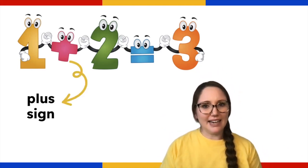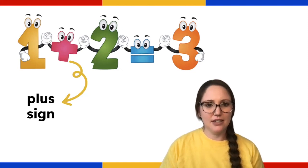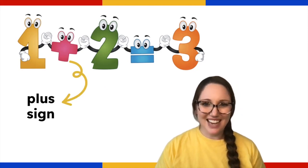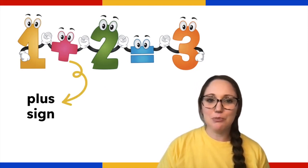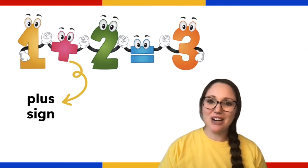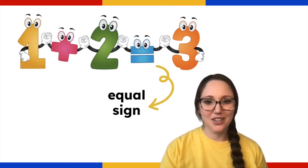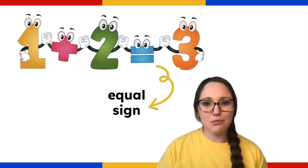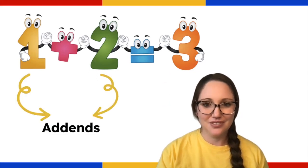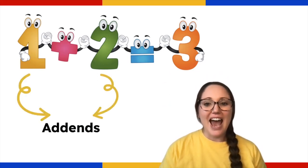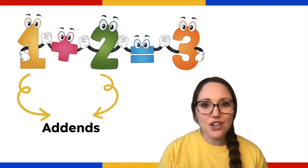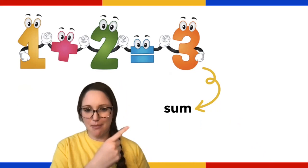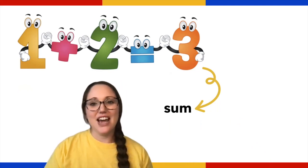You have a plus sign in a number sentence, and that goes between the two numbers that you're adding together. You have an equal sign in a number sentence, and that goes before your answer. You have addends in a number sentence, and those are the numbers that you're adding together. And you have a sum in a number sentence, and that is the answer.